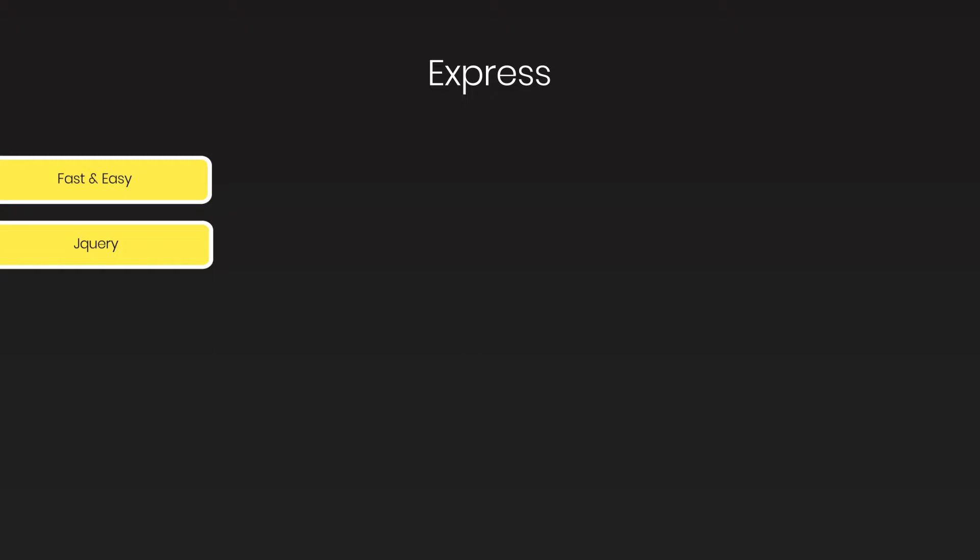Express is similar to jQuery. Developers often have to write a lot of boilerplate code. jQuery exists to cut down on this boilerplate code by simplifying the API of the browser and adding helpful new features. Similarly, Express exists to cut down on boilerplate code by simplifying the API of Node.js and adding helpful new features. Express is a relatively small framework that sits on top of Node.js web server functionality to simplify its API, making Node.js easier to use.